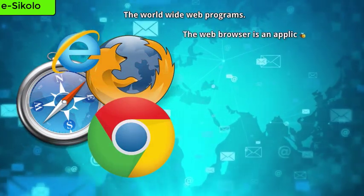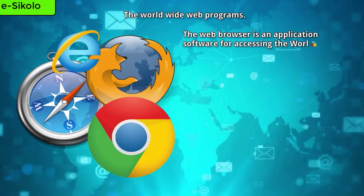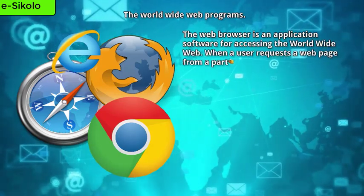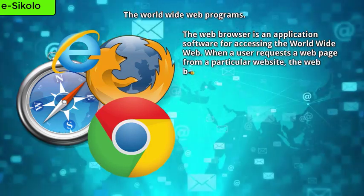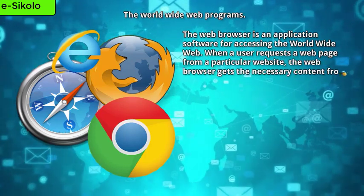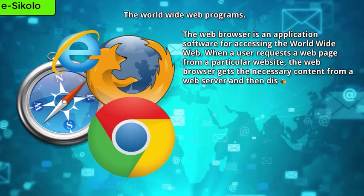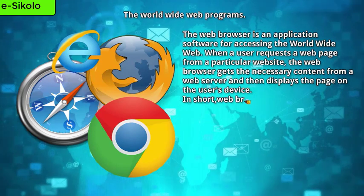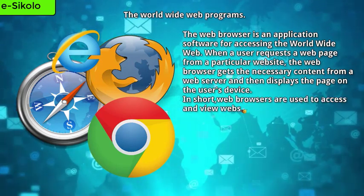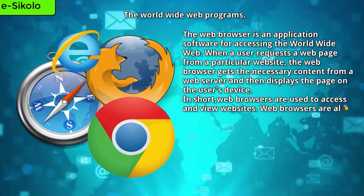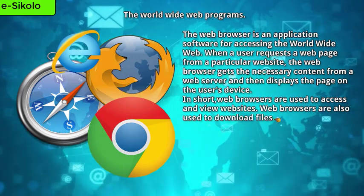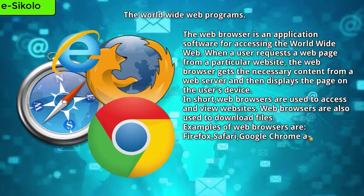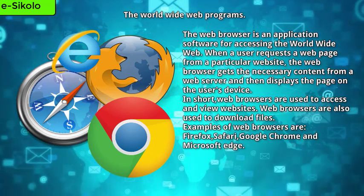The web browser is an application software for accessing the World Wide Web. When a user requests a page from a particular website, the web browser gets the necessary content from a web server and then displays the page on the user's device. In short, web browsers are used to access and view websites. Web browsers are also used to download files. Examples of web browsers are Firefox, Safari, Google Chrome, and Microsoft Edge.